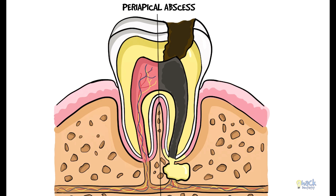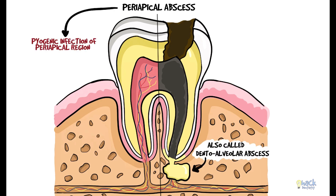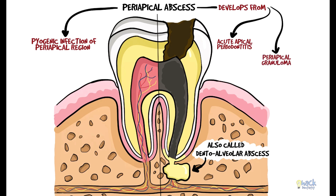Periapical abscess, or adento-alveolar abscess, is a pyogenic infection of the periapical region. This suppurative process may develop from an acute apical periodontitis or an already existing chronic lesion like a periapical granuloma.